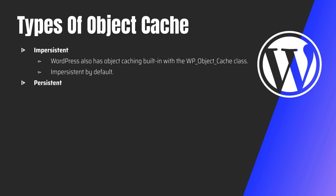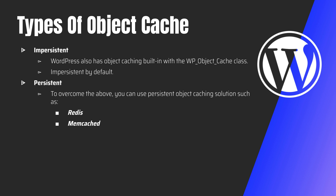To overcome this, you can use persistent object caching solutions such as Redis and Memcached. Redis provides a consistent object cache backend for WordPress that works with various Redis clients, but requires a Redis service. Rather than keeping the cache on your own server, you offload it to a Redis server — which reduces the load on your main server and is very useful.